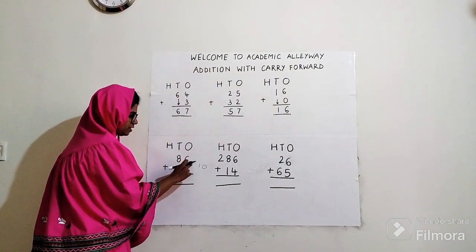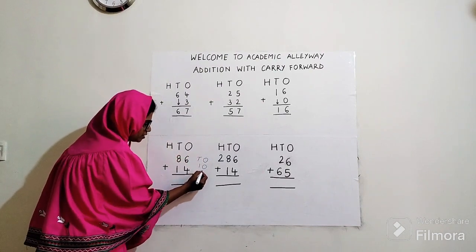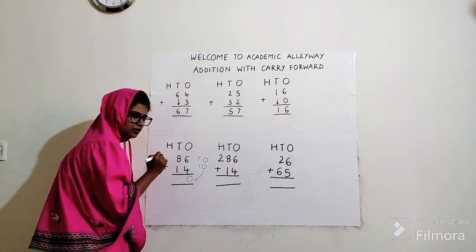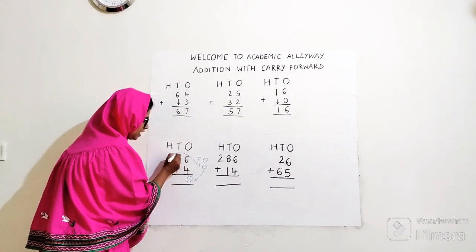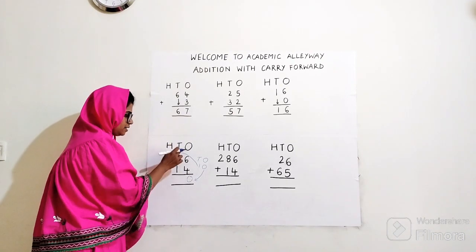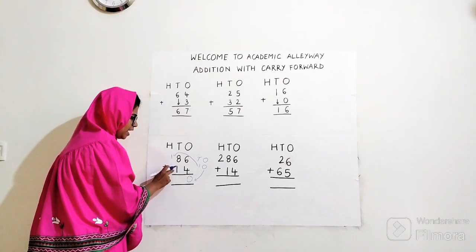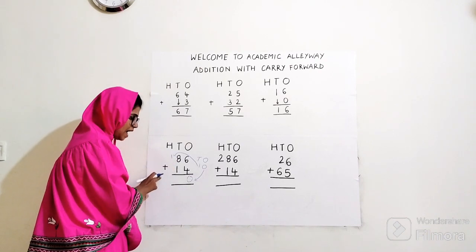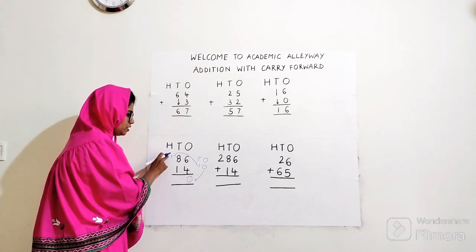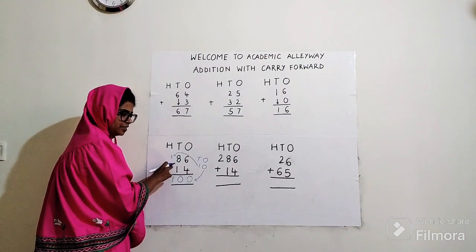Six plus four is 10. Write 10 on the side. For better understanding, I'm writing tens and ones. The digit under the ones place — zero — comes down here, and the digit under the tens place — one — goes up as carry. Now moving to tens: eight plus one. Count after eight one additional number: nine. Plus the carry of one, so eight plus one plus one. Nine plus one gives ten. Answer is 100.